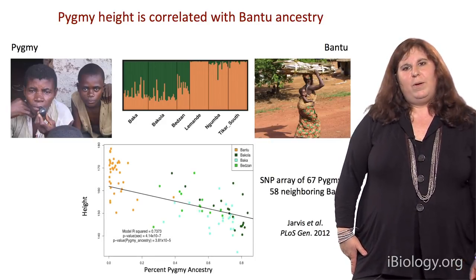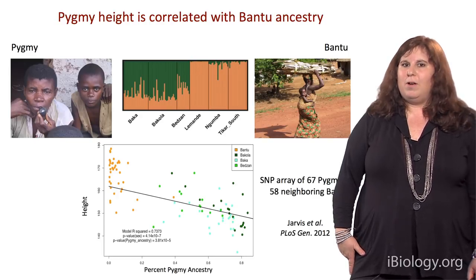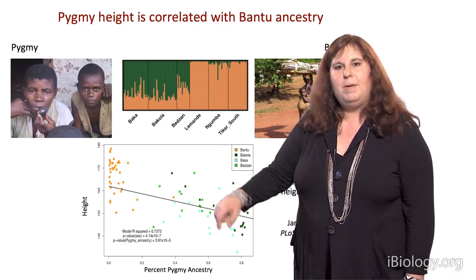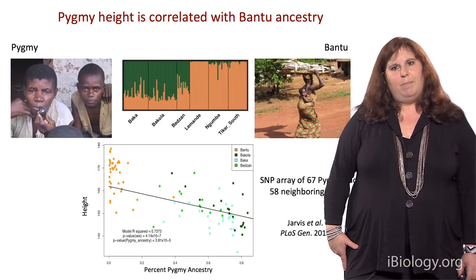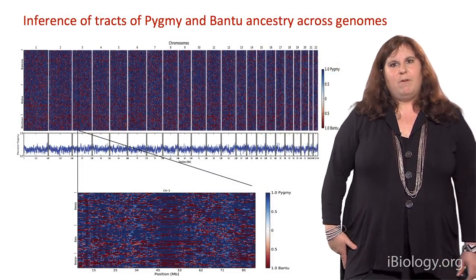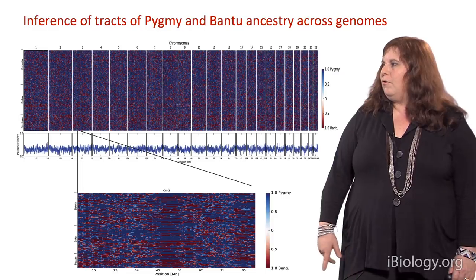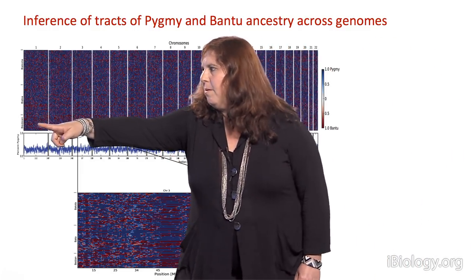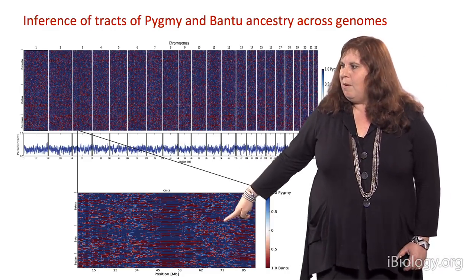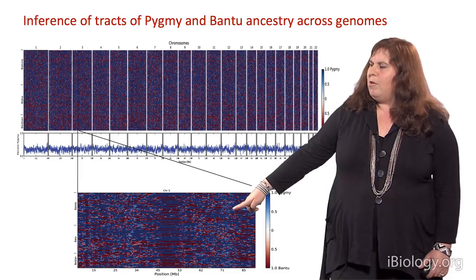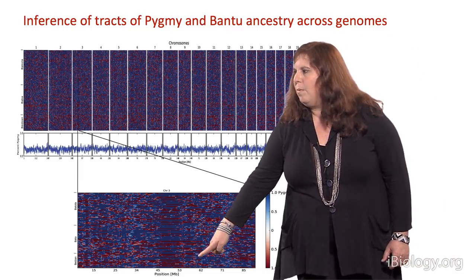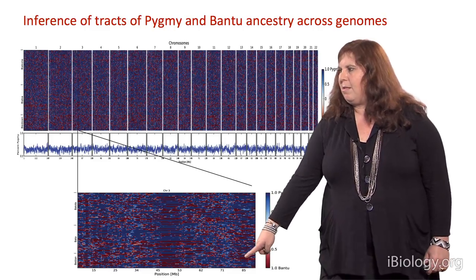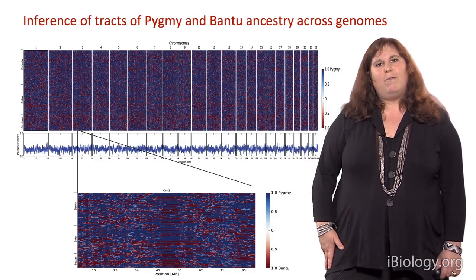When we looked at the correlation between ancestry and height, we observed a very strong and significant positive correlation: pygmies who have more Bantu ancestry tend to be taller, showing a strong genetic component to this trait. We also developed methods to infer tracts of pygmy and Bantu ancestry across the chromosome. Here I'm showing an example from chromosome 3 — blue shows tracts of pygmy ancestry and red shows tracts of Bantu ancestry. We tend to see very short tracts of Bantu ancestry, reflecting the fact that admixture has been occurring over thousands of years.